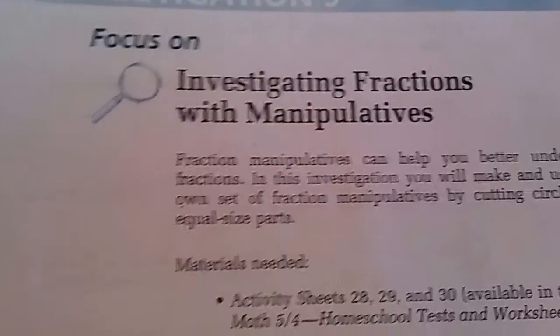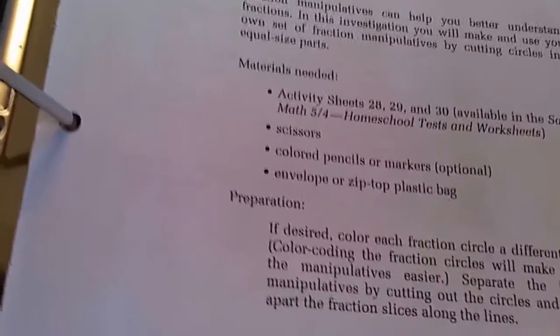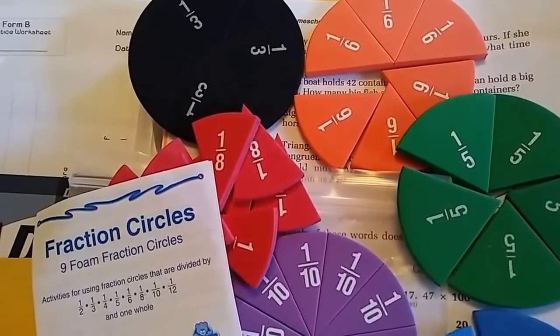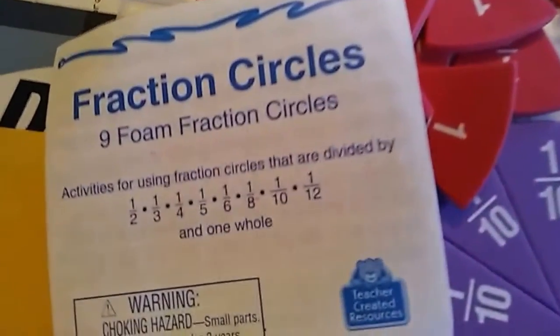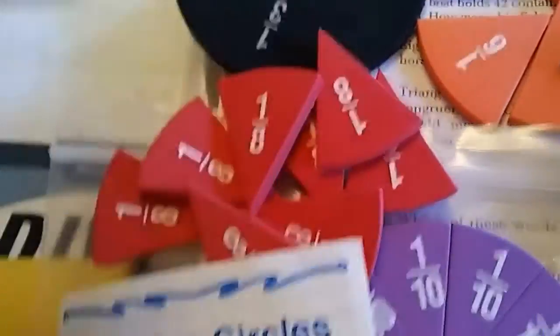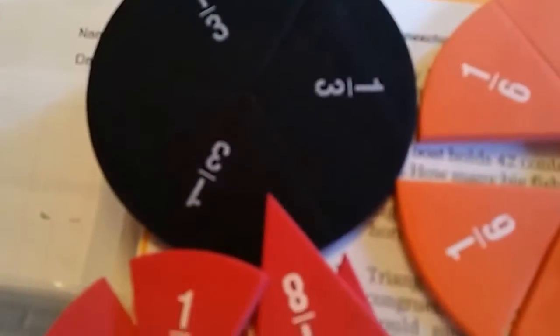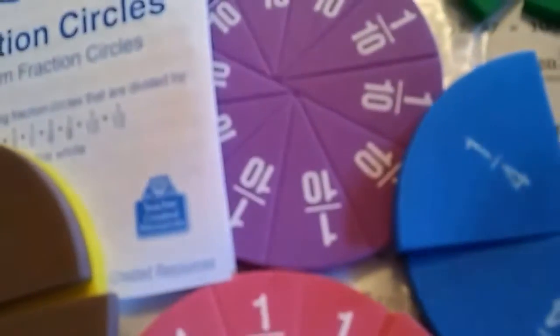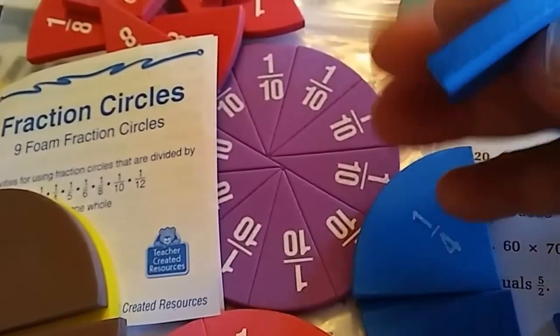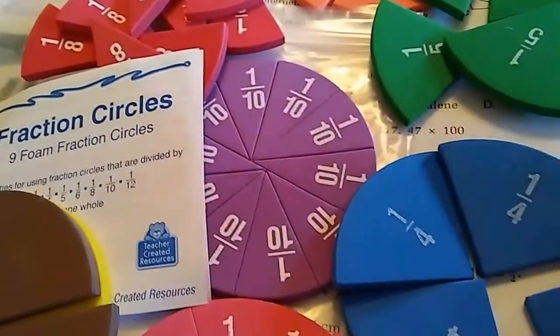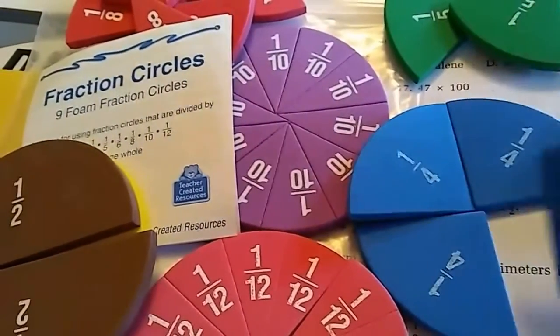For our investigation in our Saxon Math book, we used these fraction circles from Teacher Created Resources. They come in just this little bag here about the size of a sandwich bag. You have the whole half and then fractions broken down into various pieces. These are foam, so they're very soft and bendable. They're very soft and pleasurable to the touch, so children find them very easy to pick up because they're foam and they're not really sliding around much.